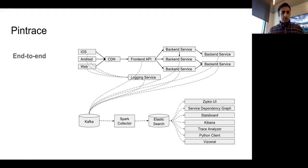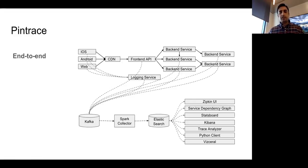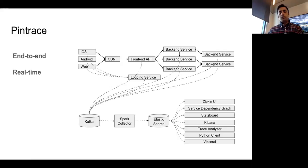A few highlights: first, our tracing is end-to-end, from the client all the way to the back end. We capture all steps including time spent on the network between the user and CDN, time on CDN, and time spent by all back-end services. Second, it's all real-time — engineers can access this data within seconds of a request, with worst-case latency of about one minute.